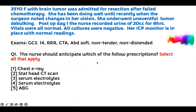Usually the questions will be long with a bunch of information. You have to weed through it and find the main points. A 35-year-old with a brain tumor was admitted for resection after failed chemotherapy. She had been doing well until recently when the surgeon noted changes in her vision. She had an uneventful tumor debulking. Post-op day one, the nurse recorded urine output of 20cc for eight hours. Vitals were all normal, all cultures were negative. An ICP monitor is in place with normal readings. The GCS was 14, heart was regular rhythm, lungs were clear, but the abdomen was soft, non-tender, and distended.